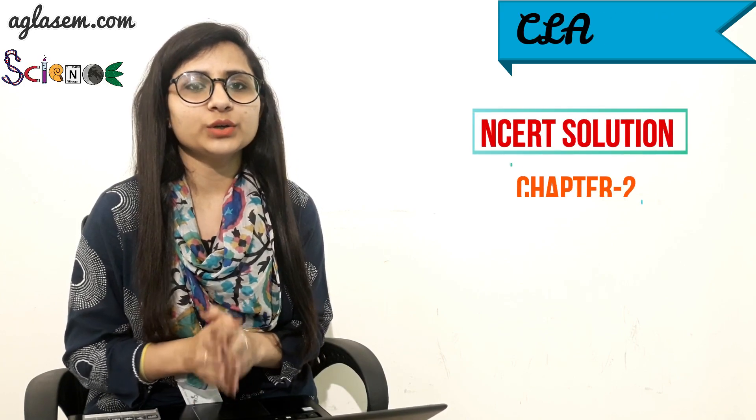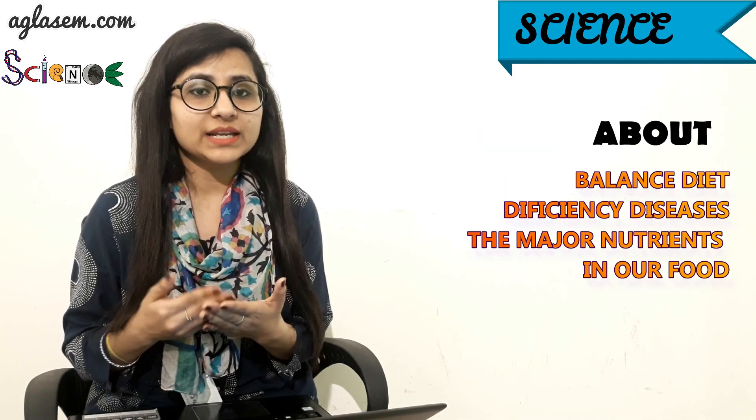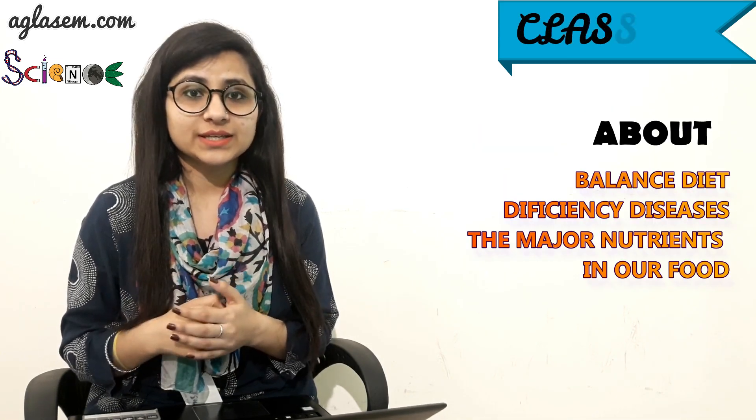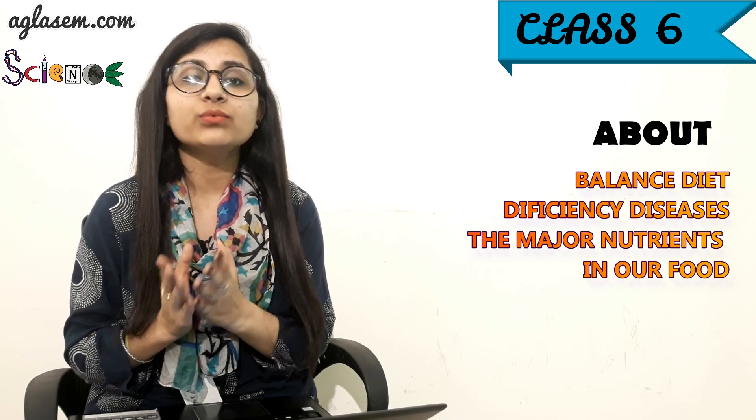Hello students, this is Akansha and welcome to our channel Aglasm School. Today we are going to do NCERT Solutions Science Chapter 2, which is Components of Food. This chapter is about balanced diet, deficiency diseases, and the major nutrients in our food. So without wasting any time, let's start with the questions and answers.